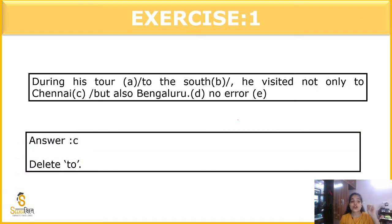The next question is, during his tour to the south, he visited not only to Chennai but also Bangalore. So, what is wrong? Here, in this part we have error. 'To' will not come. Just because of the simple thing called transitive word. Visited is also a transitive word. It is already implying something. It is already showing something. During his tour to the south, he visited not only Chennai but also Bangalore. This is the correct statement.